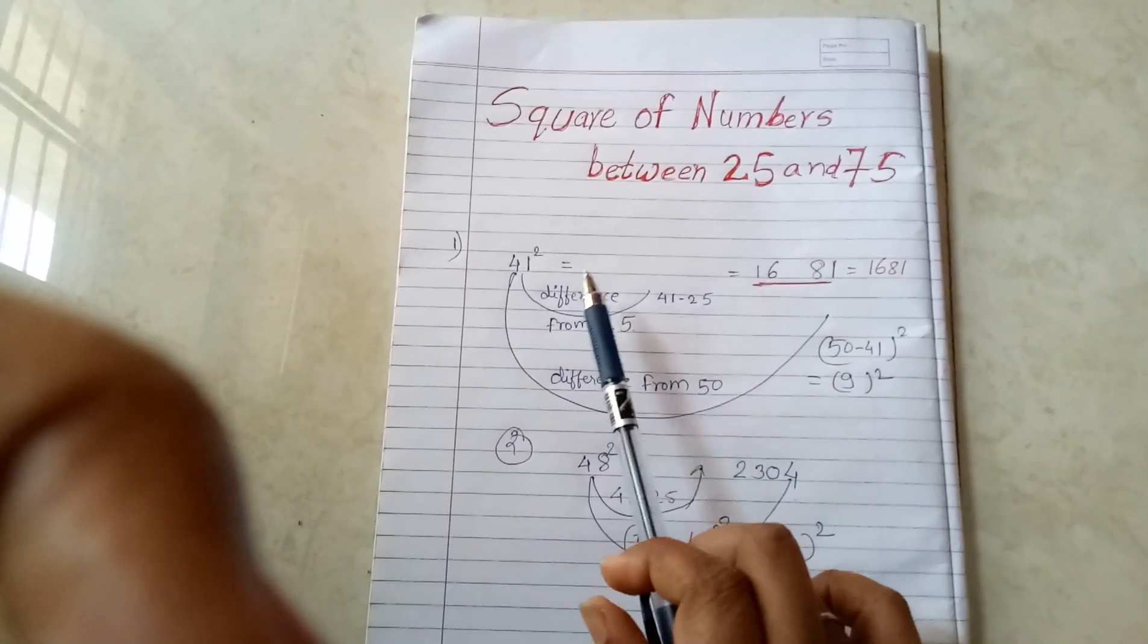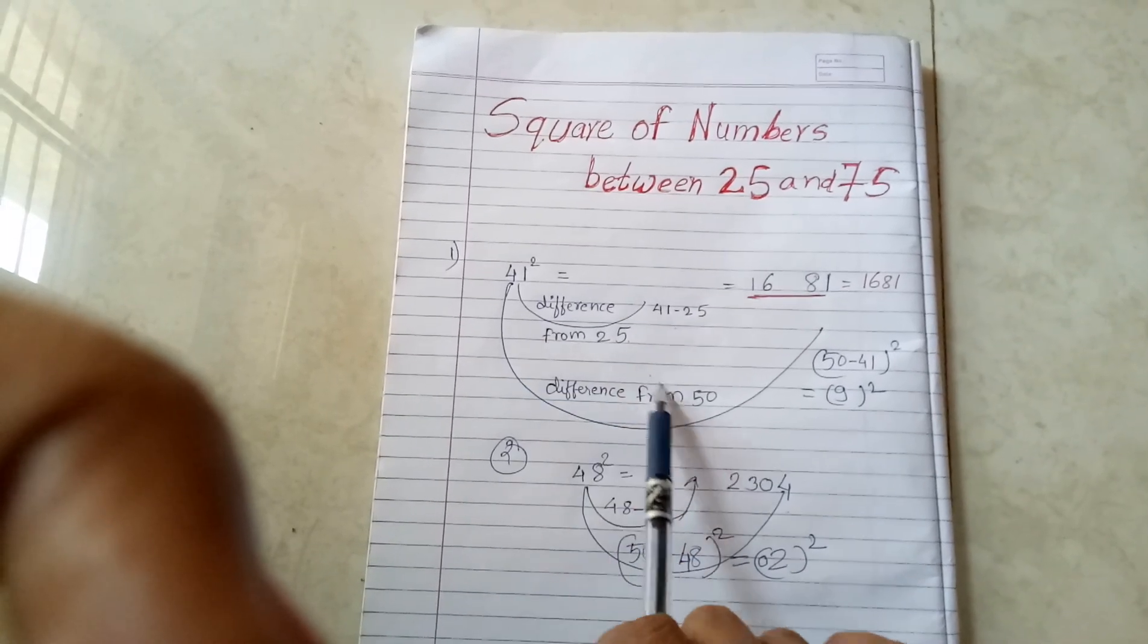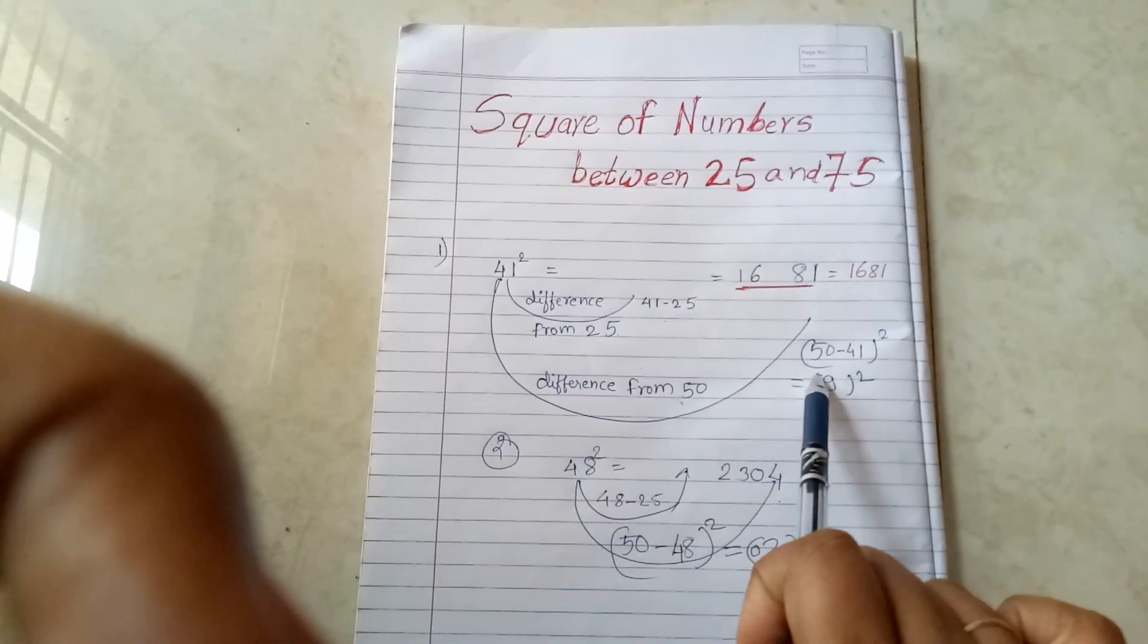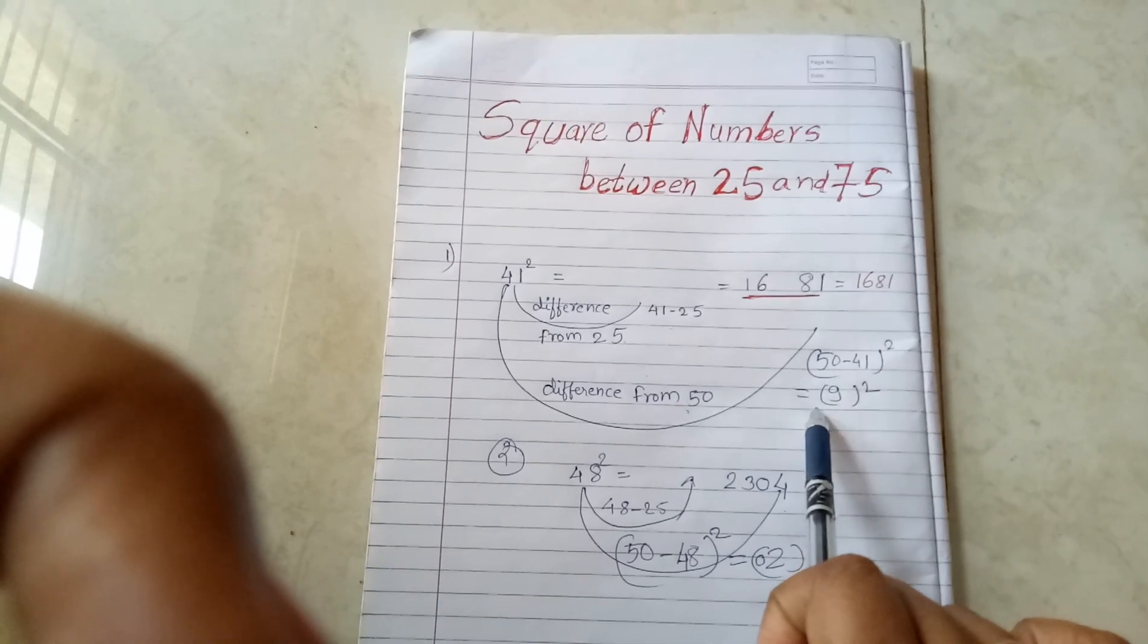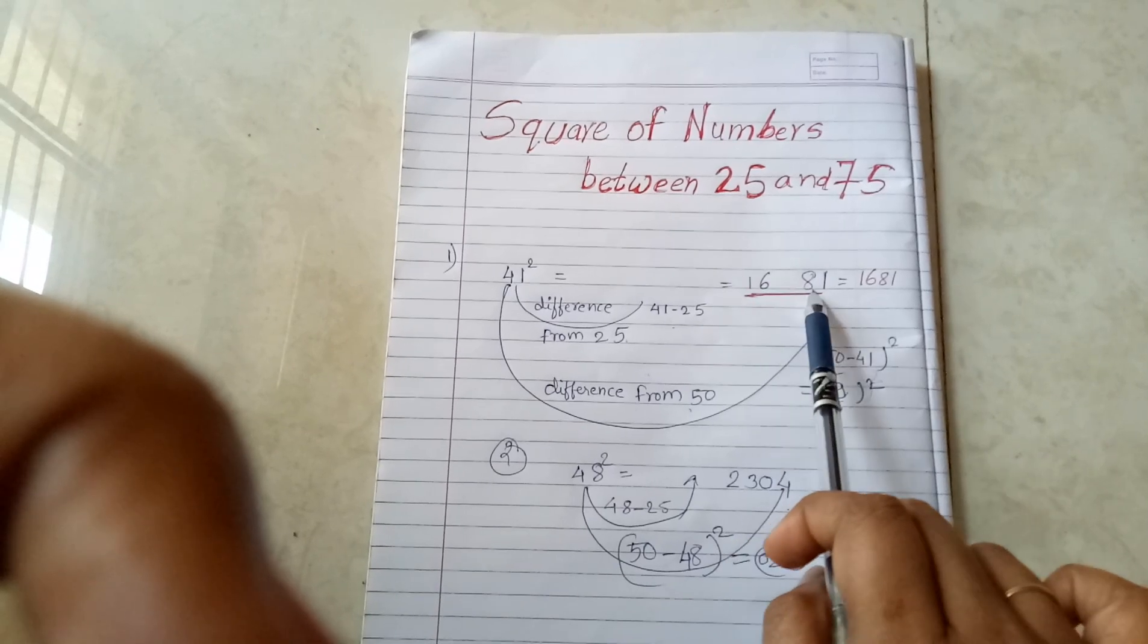Next step is you have to take the difference of 41 from 50, so 50 minus 41, you will get 9. You have to put 9 square, that is 81. So your answer is 1681.